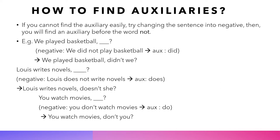How to find auxiliaries: if you cannot find the auxiliary easily, try changing the sentence into negative. Then you will find an auxiliary before the word 'not.' For example, 'We played basketball.' The negative sentence is 'We did not play basketball.' From this, we find the auxiliary 'did,' and therefore the tag will be 'didn't we?' — 'We played basketball, didn't we?'